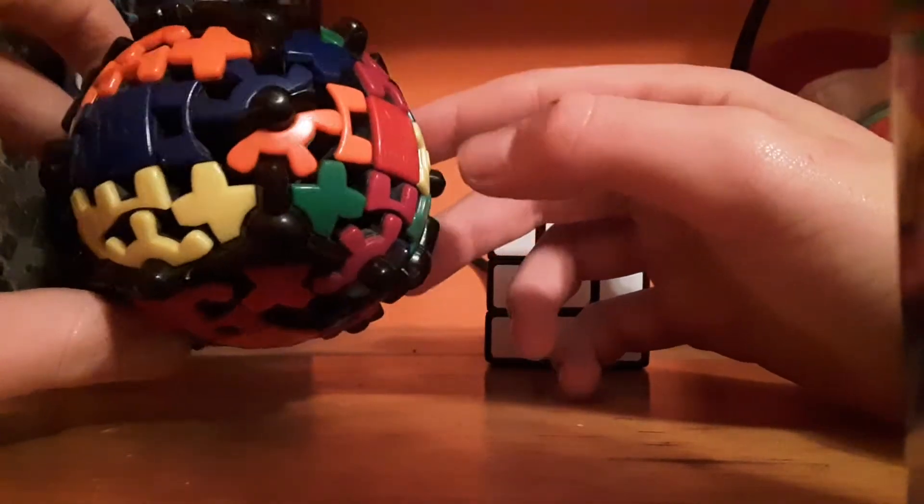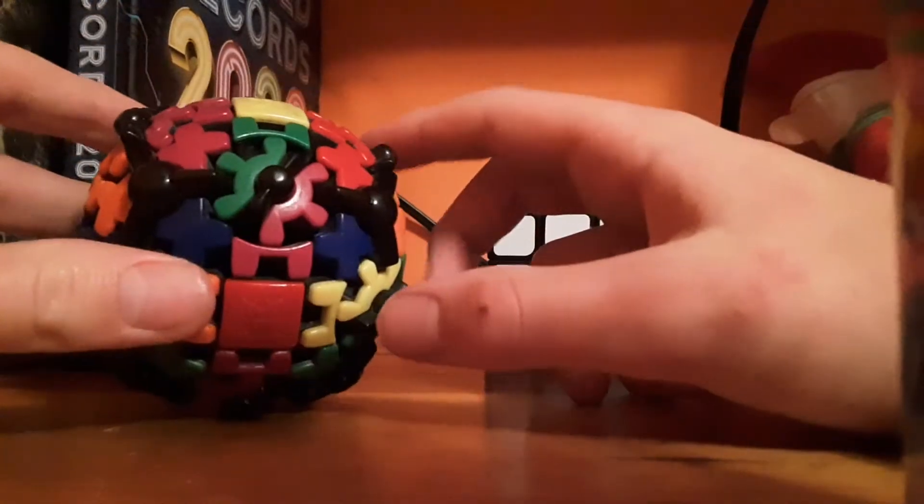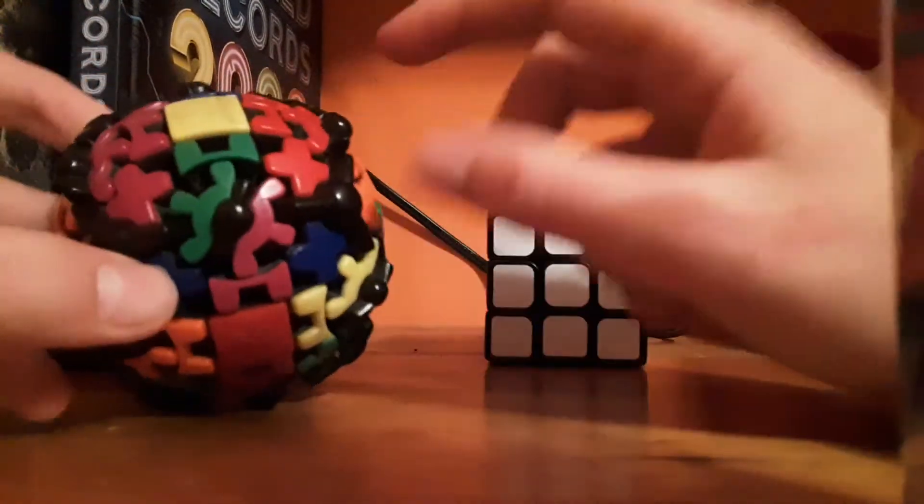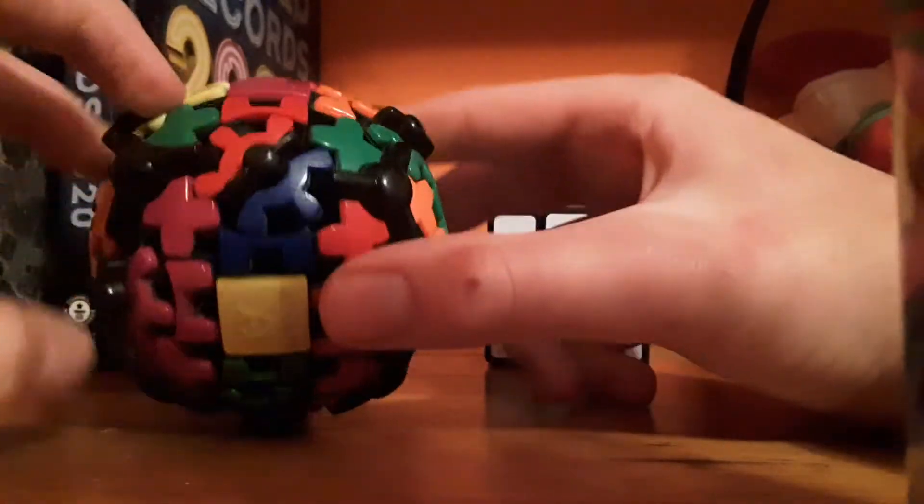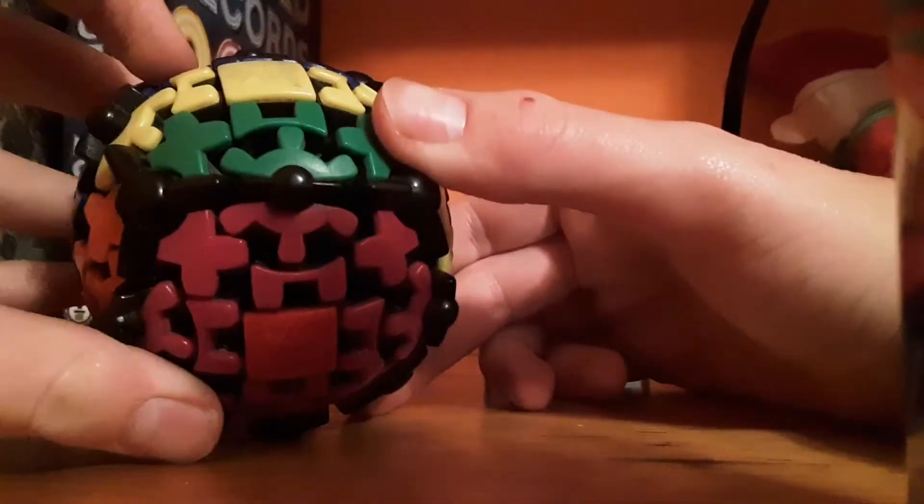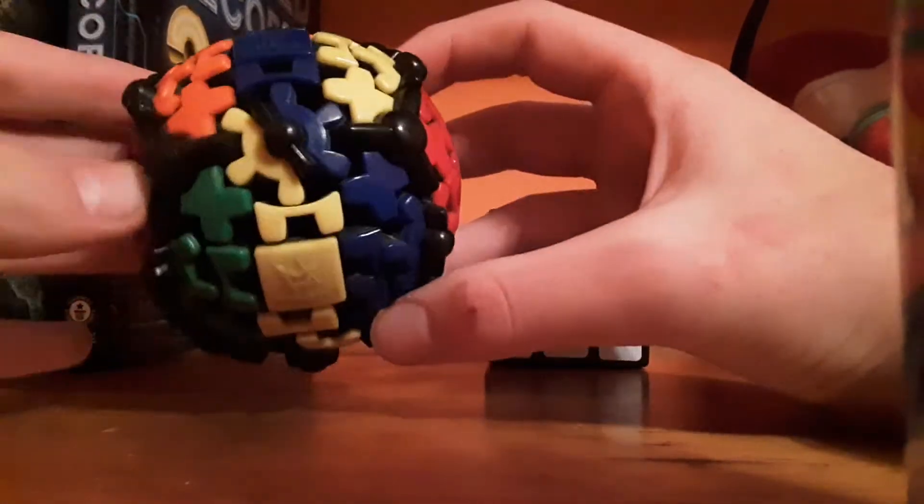And what you can actually do is come over here and look. There's a yellow. And there's a yellow down here on the right. That means there's going to be a yellow above you on the left. So you can just move it up like that. And now it's like a normal cube.